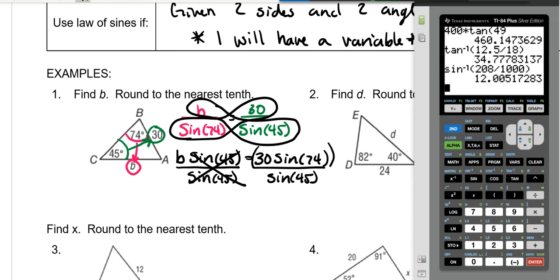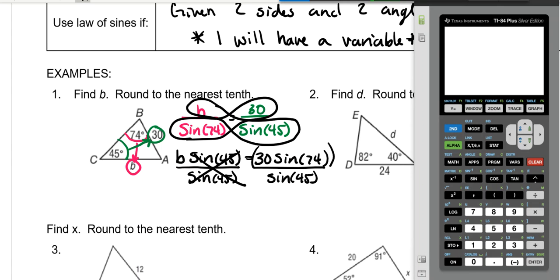So whenever you have your calculator, first of all, always check. Make sure that it is in degrees, which mine is. So we're going to open parentheses, do 30 times the sine of 74. And we want to close two parentheses, because the first set of closed parentheses is for the sine. The second set is for the whole numerator. And then divide by the sine of 45.